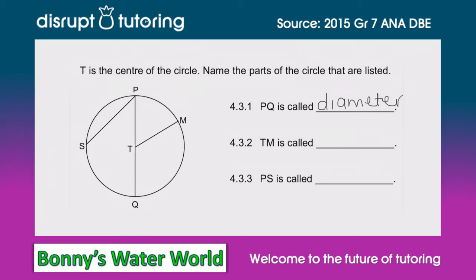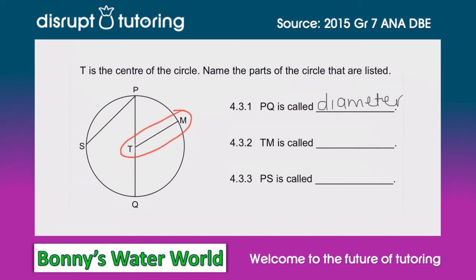Brilliant! A diameter is a line that passes directly through the center of the circle from one side to the other. Moving on to the next one — we see TM, this line segment over there. Here we notice that it starts at the center and goes to the outside of the circle, but it's not going the whole way — only half the distance of a diameter. We know a line like this is called a radius.